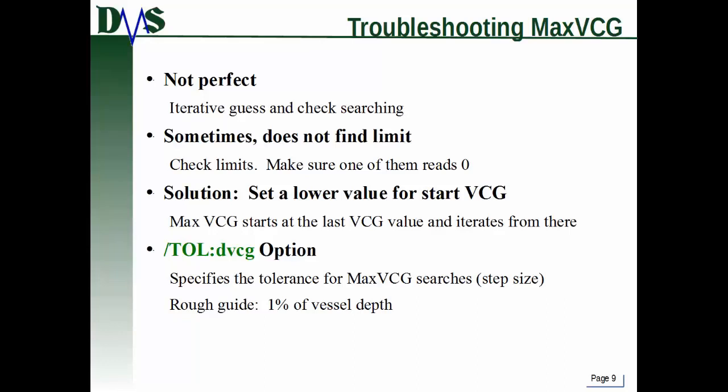One thing to check: max VCG will sometimes not find its limits. The output lists a column for the first five limits included, showing which one hit zero — meaning which limit drove the max VCG value. But sometimes, for a certain draft range, none of the limits were reached. At that point GHS is giving you an answer, but the answer really isn't valid.